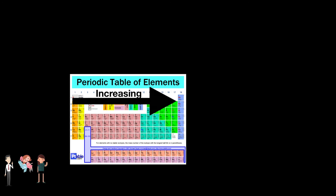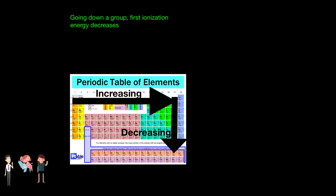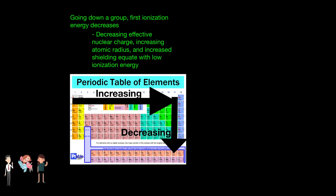The second trend observed is that going down a group, first ionization energy decreases. This makes a lot of sense, because effective nuclear charge decreases going down a group and atomic radius increases. Not only that, but there are many core electrons which cause shielding and force the outer shells of electrons, especially the valence electrons, to be further from the nucleus and more loosely held. Because the attraction between the nucleus and valence electrons decreases, the valence electrons are far from the nucleus, and the core electrons cause shielding between the nucleus and outer electrons, decreasing the effect the nucleus has on outer electrons.